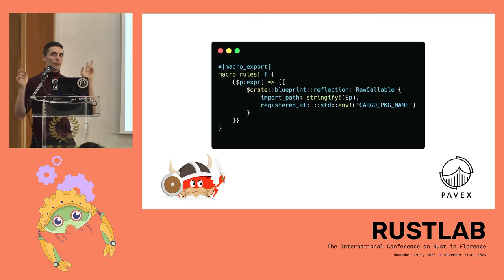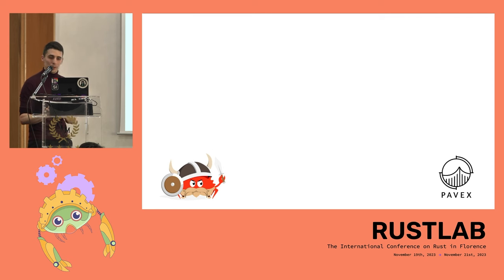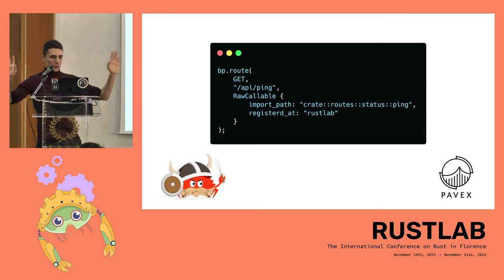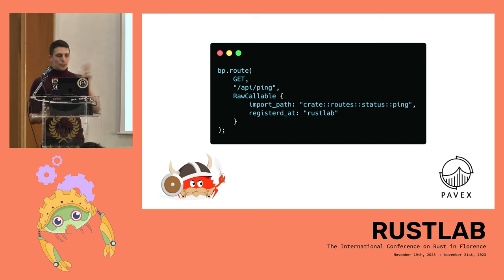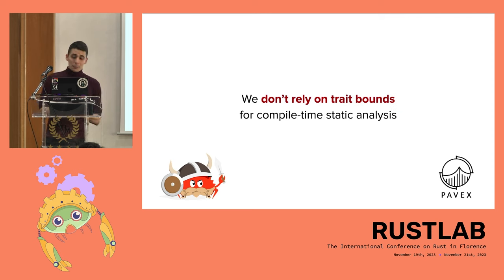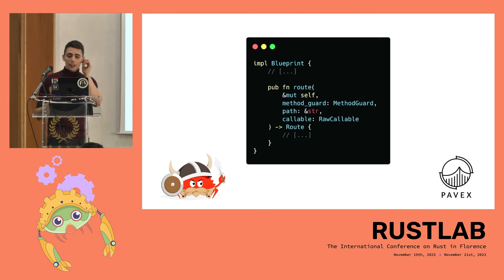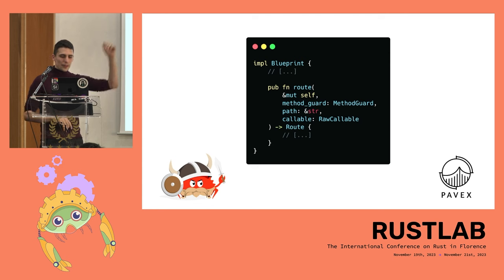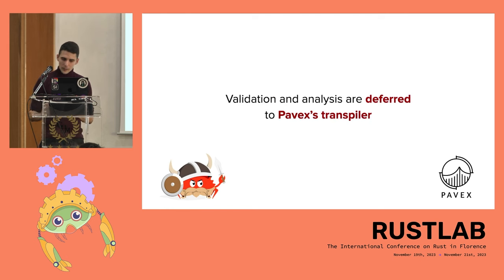If you look at the API ping registration, that's just sugar to a string path and a crate identifier. We just want to know the import path as a string. This matters for crate resolution. Now, we want high-quality error messages that speak the language of the backend. This means we don't rely on trait bounds for compile-time static analysis. If you go into the route definition method that the blueprint exposes — this is the full definition, there are no secrets — it takes `self`, a method guard (GET, POST, whatever), the path like `/api/ping`, and then the raw callable output of that macro.